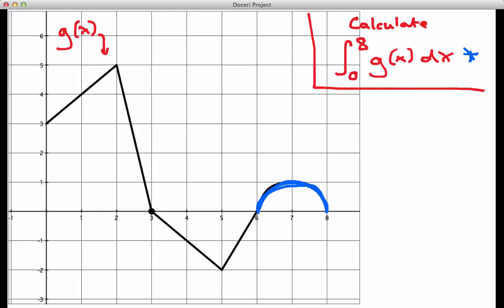The definite integral from 0 to 8 of g of x dx is going to be the exact value of the area that is between the graph of g, the x-axis, and x equals 0 over here on the left and x equals 8 over here on the right.